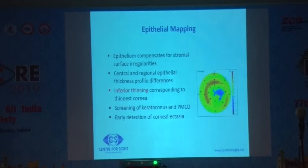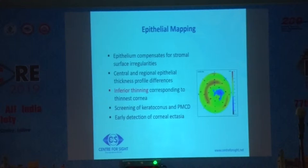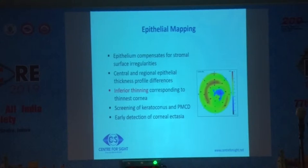Epithelial mapping is a newer concept. It is based on the observation that the epithelium gets remodeled in response to underlying stromal irregularities, becoming thicker in areas of valleys and thinner in areas of peaks. We look at the central and regional epithelial thickness profile differences. It is a very important tool for screening early keratoconus, PMCD, and early detection of corneal ectasia.